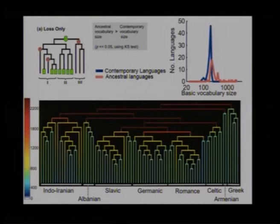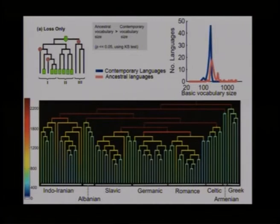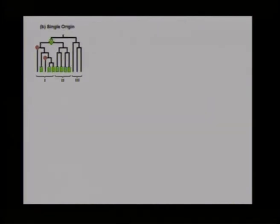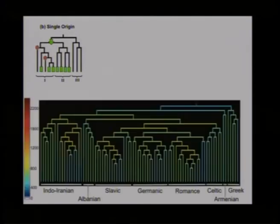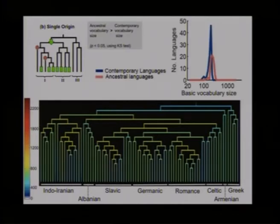Some of you may have thought: maybe we don't need to place the single origin at the root — it would be more parsimonious to put the origin on a lower ancestor node, which still explains all presence cases without an extra loss. So the next model — the 'single origin' model — allows only one most parsimonious origin plus additional losses per cognate. The tree indeed cools down, with more blue (smaller vocabularies) for ancestral languages, but ancestral vocabulary is still significantly larger than contemporary vocabulary, so this model is also not preferred.